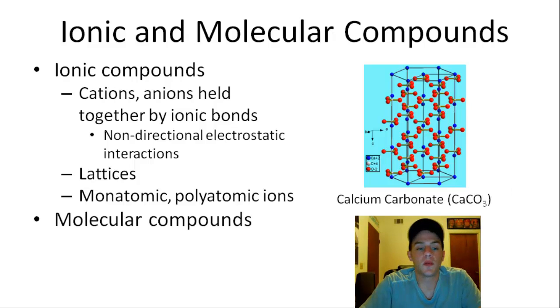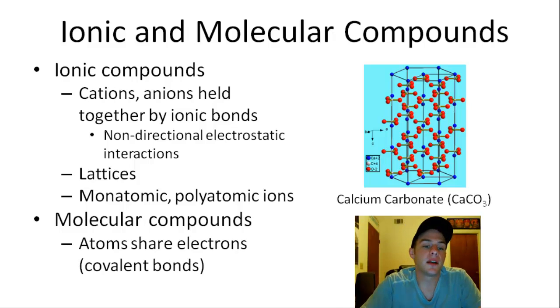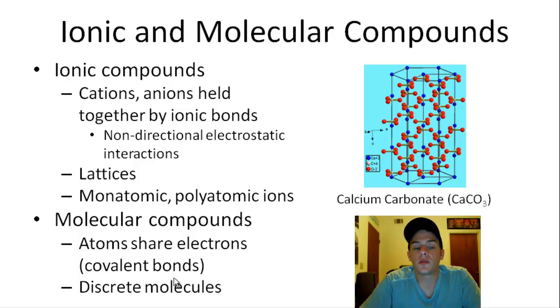So there's ionic compounds, but then we also have molecular compounds. And like I said earlier, these actually exist as discrete molecules. And the reason why they do that is because the atoms are sharing electrons with one another to form these molecules.